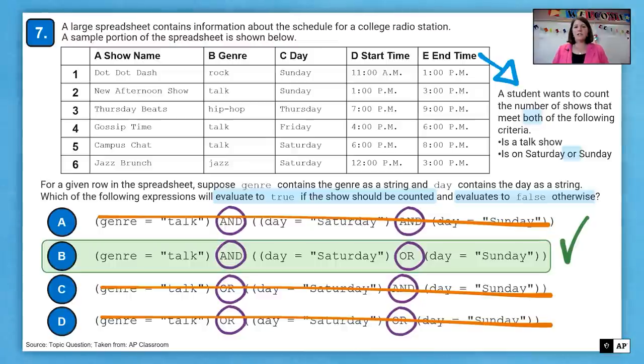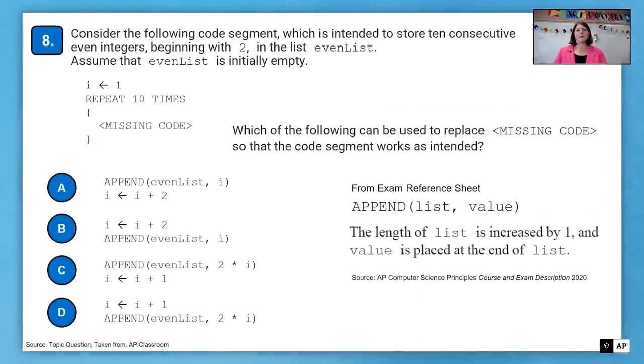All right. Question number eight. Consider the following code segment, which is intended to store 10 consecutive even integers, beginning with two in a list called even list. Assume that even list is initially empty. So we have the value I is set to one and it repeats 10 times. And we have to fill in that missing code, which of the following can be used to replace missing code so that the code segment works as intended.